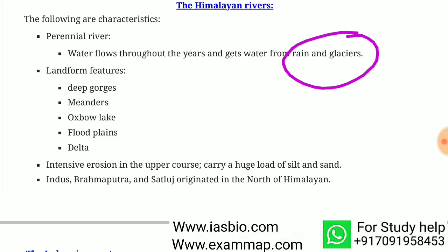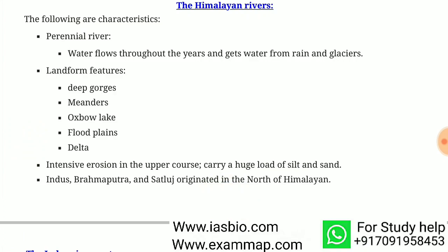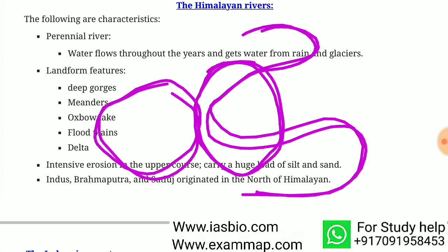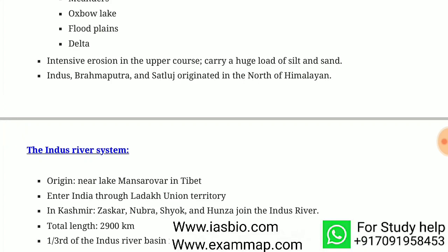Himalayan rivers have features such as deep gorges, where river flow cuts through the land. They also form meanders, and when a meander gets cut off it forms an oxbow lake. Himalayan rivers also form flood plains and deltas. Intensive river erosion in the upper course causes them to carry a huge load of silt and sand.